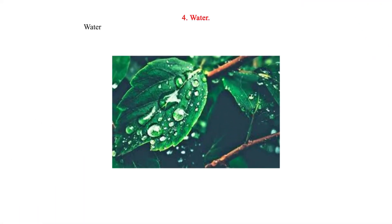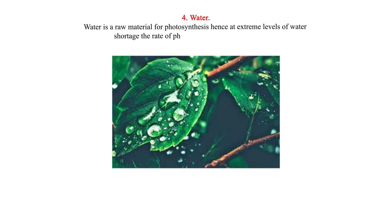4. Water: Water is a raw material for photosynthesis. Hence, at extreme levels of water shortage, the rate of photosynthesis is severely affected.